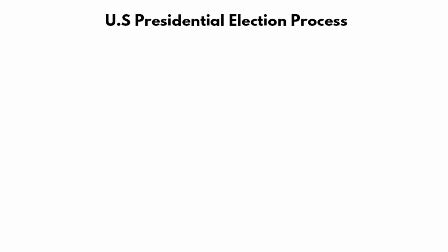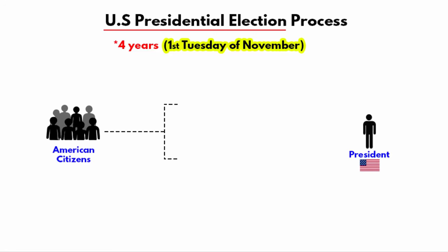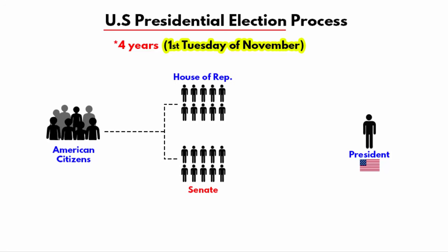The US presidential election is held every four years. It occurs on the first Tuesday of November. When Americans go to vote, they don't vote for the president directly. Instead, American citizens have to vote for a group of officials who make up the Electoral College. The word 'college' here simply refers to a group of people whose job is to choose the president and the vice president of the United States. Once the electors are elected by citizens, the Electoral College meets and decides who to choose for the post of president and vice president.